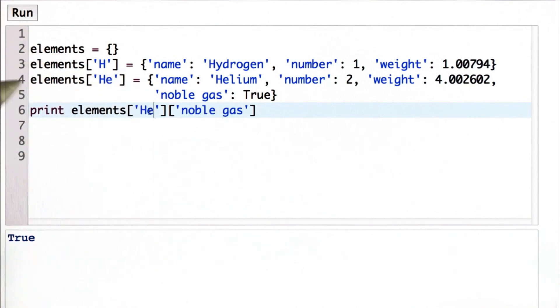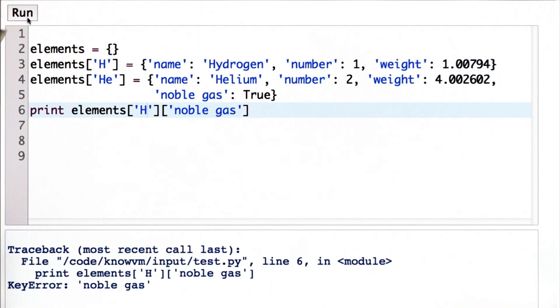What's going to happen if we look it up for hydrogen? So here we get an error. And we get the same error that we got before when we tried to look lithium up in the elements that didn't include lithium as a key. We're looking for the key noble gas, but it doesn't exist.